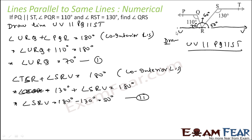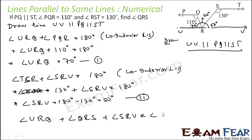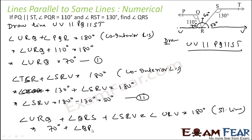Now, if you add these three angles along this straight line, you get: angle URQ plus angle QRS plus angle SRV equals 180°. Putting in the values: 70° plus angle QRS plus 50° equals 180°. Solving this, angle QRS comes out to be 60°.